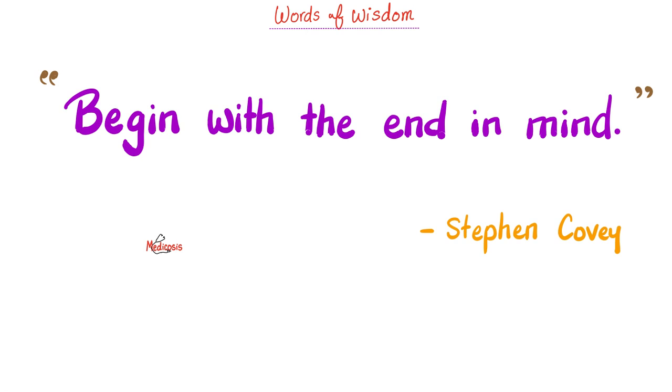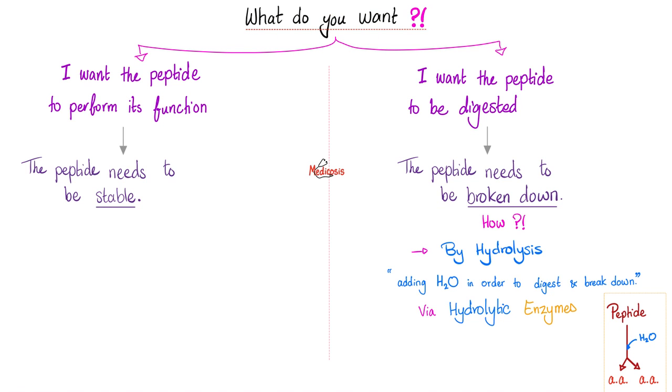Dr. Stephen Covey said, begin with the end in mind. Ask yourself, what am I trying to achieve? I want the peptide to perform its function. Sure, then the peptide needs to be stable. Right? But if you have a different goal in mind, I want the peptide to be digested. Now the peptide needs to be broken down. How do I break a peptide? By hydrolysis. By adding water. So hydrolysis is adding water in order to break down something. Who does that? A hydrolytic enzyme. You see that? That's a peptide. When you add water to the peptide, you break it down to amino acid. Hashtag hydrolysis. Hashtag hydrolytic enzymes.